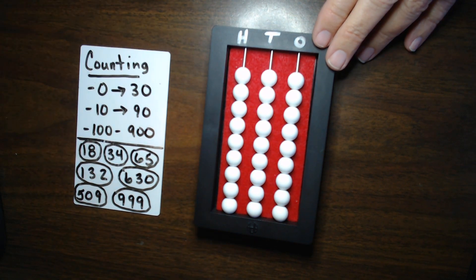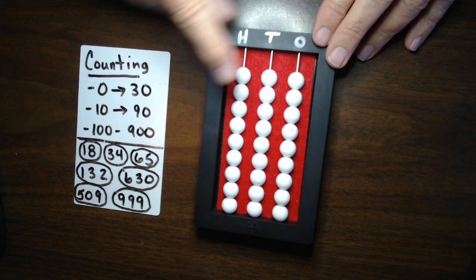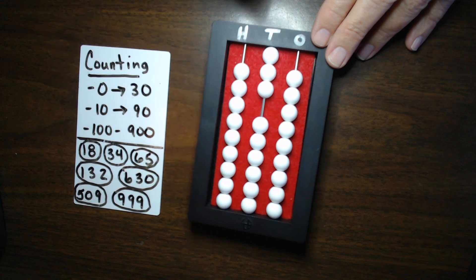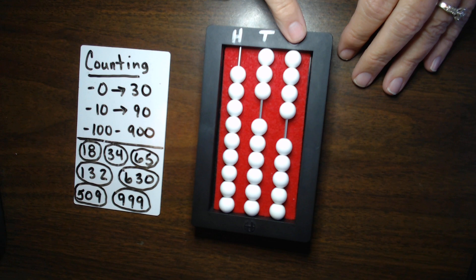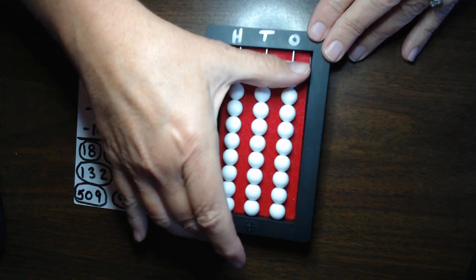So, let's clear that. Let's set 34. So, now we're starting 10 column. 10, 20, 30, 4. 34. You got it, right? You're getting it.